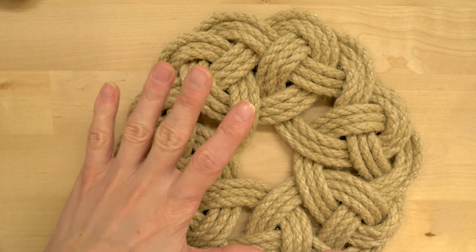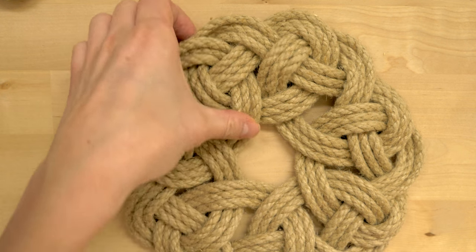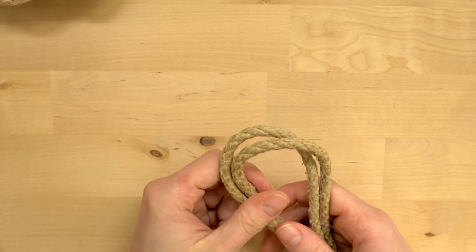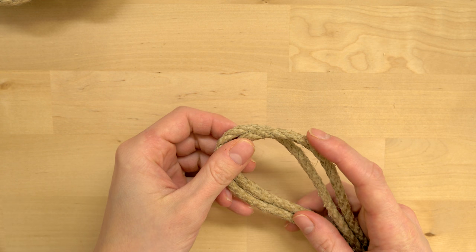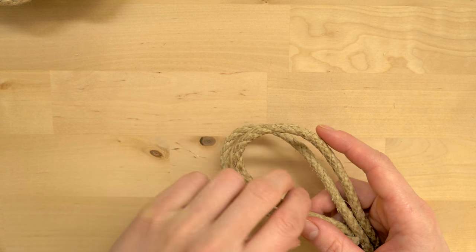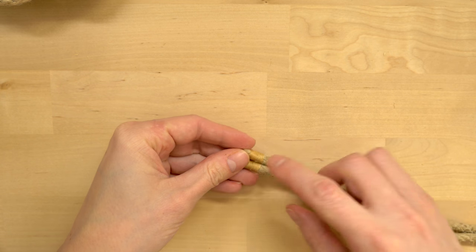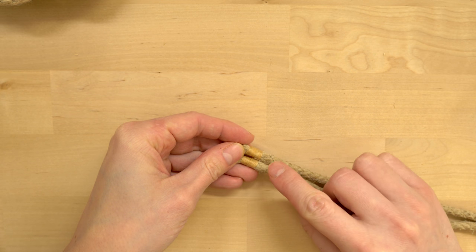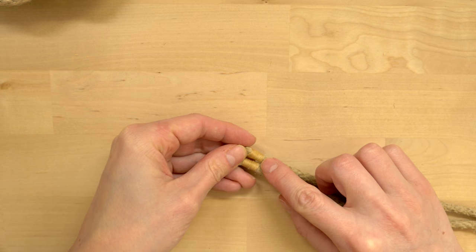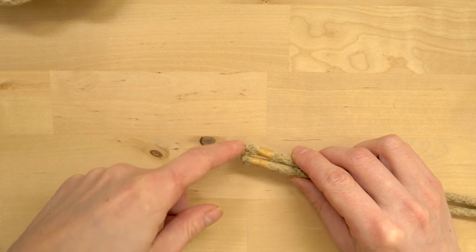Before we can start tying this mat, we need to prepare the rope. There are two things that we need to do. The first one is to secure the ends of the rope, and you can simply tape them up or use a common whipping technique to prepare the ends and prevent them from fraying or unraveling.